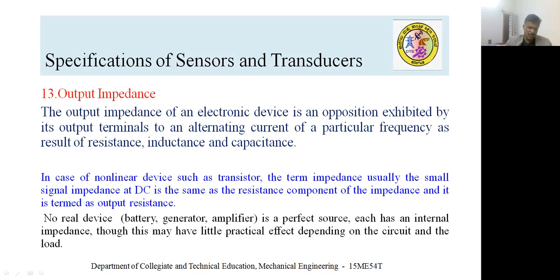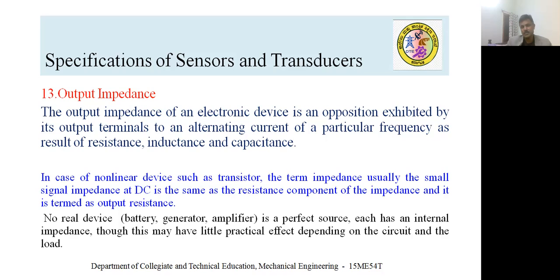The last specification is output impedance. The output impedance of an electronic device is the opposition exhibited by its output terminals to an alternating current of a particular frequency, as a result of resistance, inductance, and capacitance. You will understand in forthcoming slides how exactly this impedance affects measuring devices.